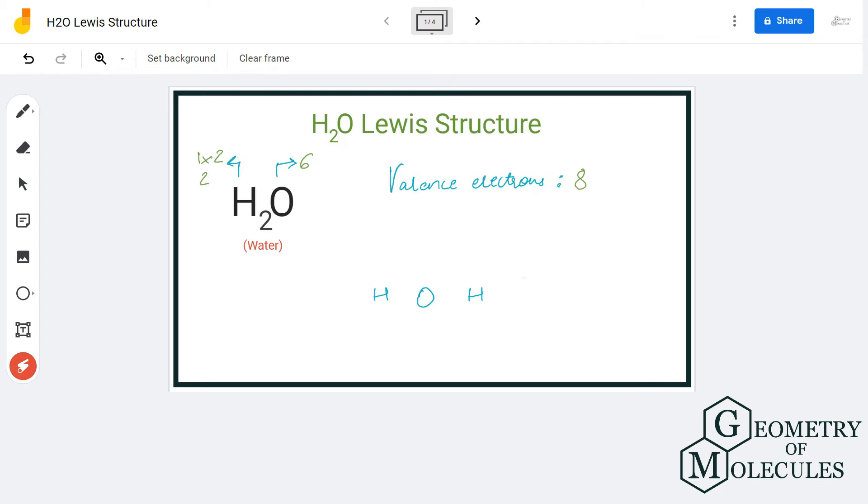Now that we know the total number of valence electrons for this molecule, we will place the atoms and their individual valence electrons. As you can see, there are two hydrogen atoms and one oxygen atom. The oxygen atom will take the central position because hydrogen atoms cannot take the central position, so oxygen will be in the center and two hydrogen atoms will be on the outside.